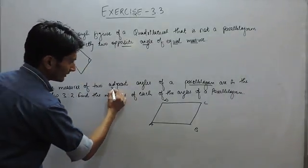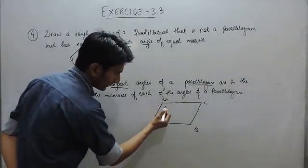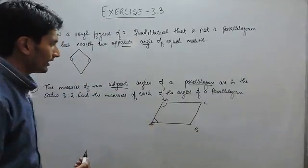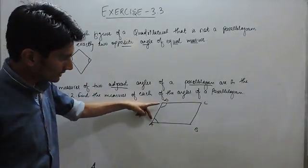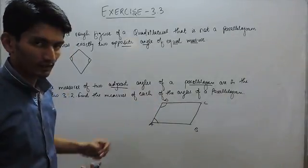You are given the ratio of angles in this parallelogram. These two can be termed as adjacent angles because this angle is adjacent to this, meaning just after this angle.